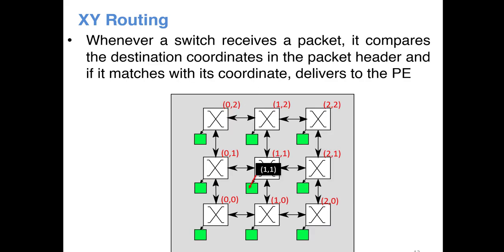Now whenever a switch receives a packet, either from its associated PE or from one of its neighboring switches, it will always compare the header from that packet with its coordinates. The header will have the information about the destination PE. For example, this packet has information 1,1, that means this packet is destined for PE with coordinate 1,1. Since they are matching, this switch, whenever it receives the packet with this coordinate, will deliver it to its PE.